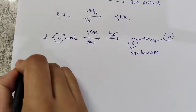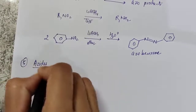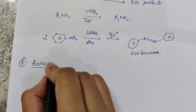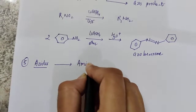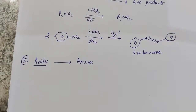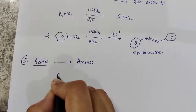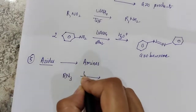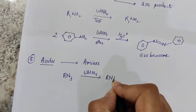Azides are also reduced by lithium aluminium hydride to give amines. So both amides and azides form amines — R-N₃ on reaction with lithium aluminium hydride gives R-NH₂.